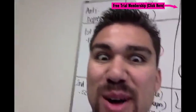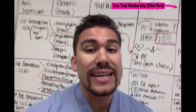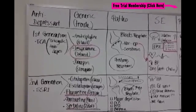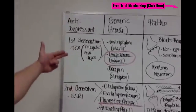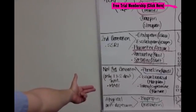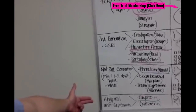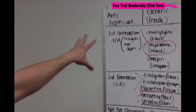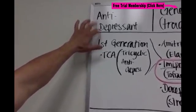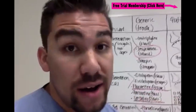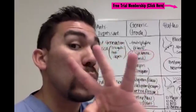Now we get into the big mama. Ladies and gentlemen, boys and girls, this is one of the biggest lectures we're going to have in our psychiatric course. You have your TCAs, your SSRIs, your MAOIs, as well as your atypical antidepressants. These are all considered under the classification of antidepressants. You also have your anti-anxiety and your antipsychotics — keep those three classes separated.